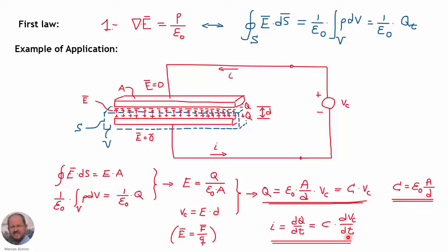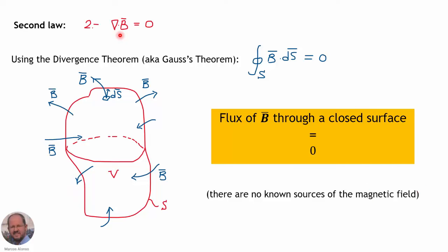The second equation is even simpler. It says that the divergence of the magnetic field is equal to zero. Using the divergence theorem again, the flux of the magnetic field through any closed surface must equal the integral of the divergence over the volume inside the surface. Because the divergence is zero, the flux through any closed surface of the magnetic field is always zero. This means there are no known sources of the magnetic field. Contrary to the electric field, which is generated by charges, in the case of the magnetic field we don't have any source that generates this field.